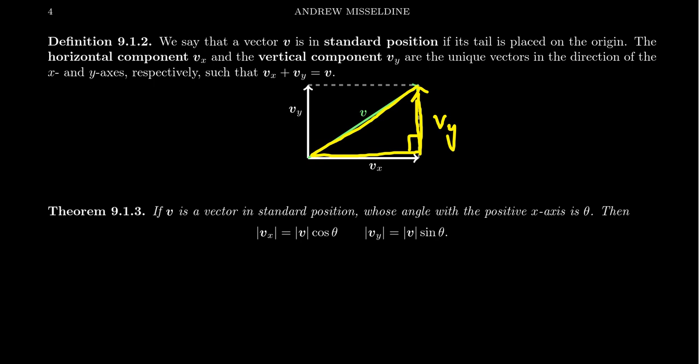In particular, the magnitudes of these three vectors, which are scalar quantities, will satisfy the Pythagorean relationship. You're going to have that the magnitude of v squared is equal to the magnitude of vx squared plus the magnitude of vy squared. That's the Pythagorean relationship — the hypotenuse squared is equal to the sum of the legs squared.